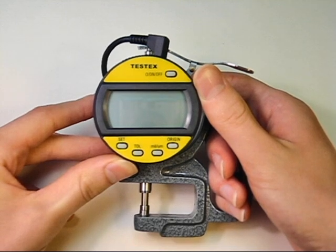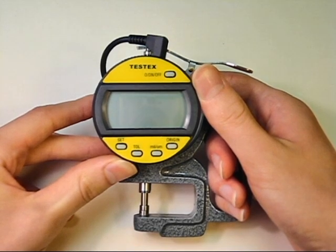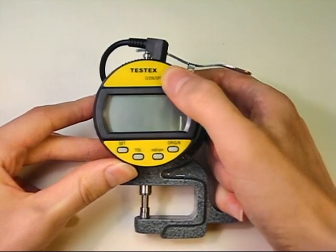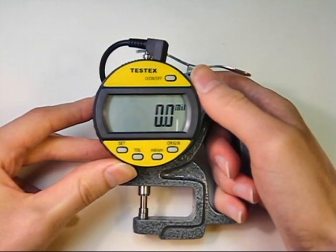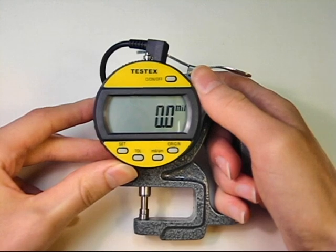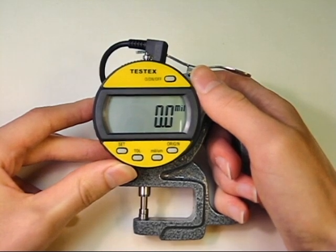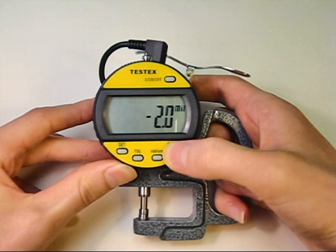Obtaining a measurement starts with turning the gauge on by pressing and holding the on-off button, then presetting to subtract the thickness of the replica film's incompressible layer. Presetting is done by pressing the origin button.